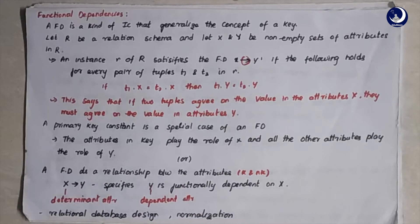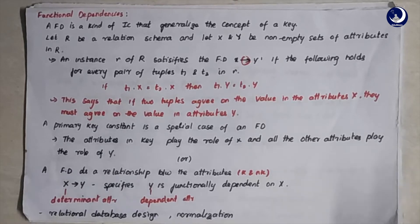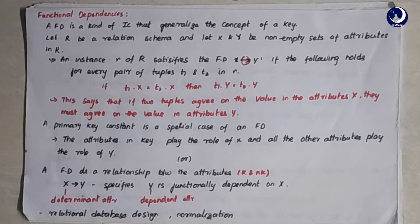So a functional dependency says: if two tuples agree on the values of attributes X, they must also agree on the attributes of Y. A primary key is a special case of functional dependency. Functional dependency plays a very vital role in relational database design and is also used in normalization — the process of decomposing a large table into smaller tables to reduce data redundancy and inconsistency.